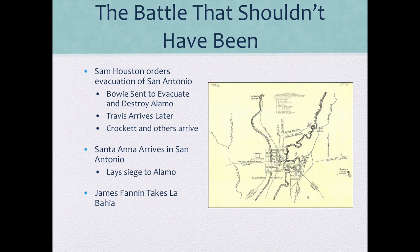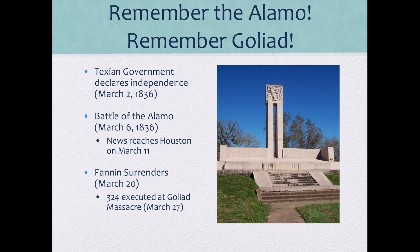Fannin at the same time took La Bahia — today called Goliad, outside of Victoria — and the mission and fortress there, and he too refused to leave. The deaths of these people at the Alamo and at Goliad led to two battle cries: 'Remember the Alamo' and 'Remember Goliad.'